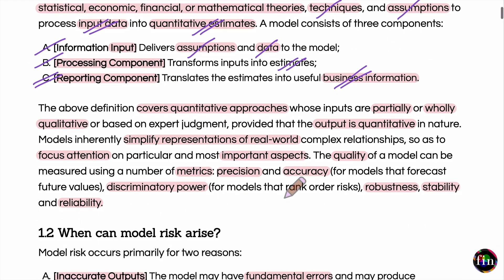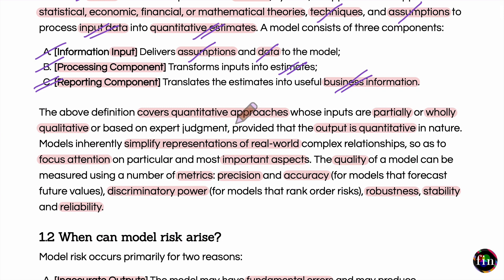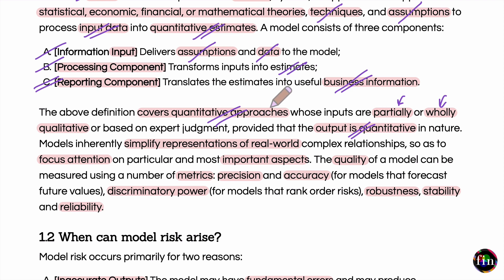Please note that in this definition of a model, we would also include those quantitative approaches whose inputs are partially or wholly qualitative in nature, or inputs which are based on expert judgment, but what comes out of the model is indeed a quantitative output. For example, a credit scoring model would also be deemed as a model as per this definition, even if it takes in inputs which are partially or wholly qualitative in nature.